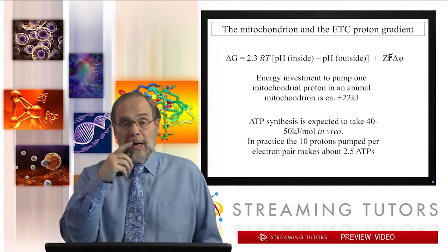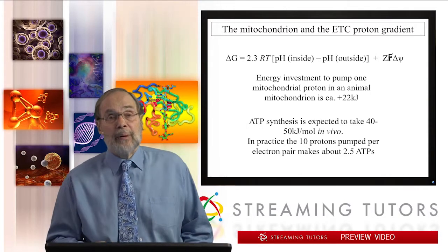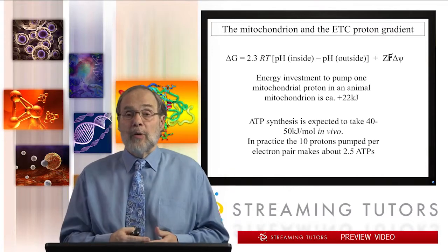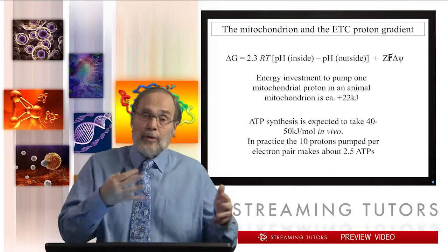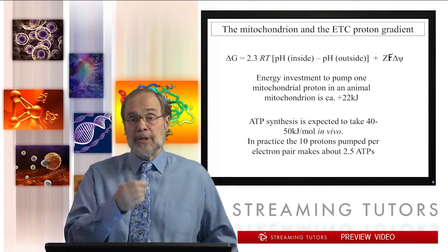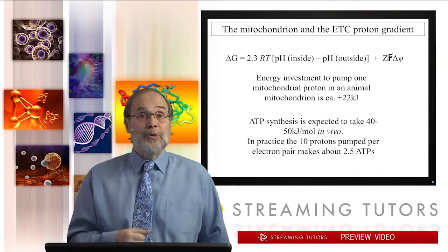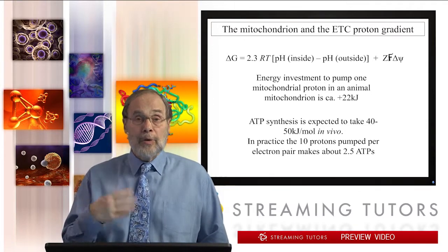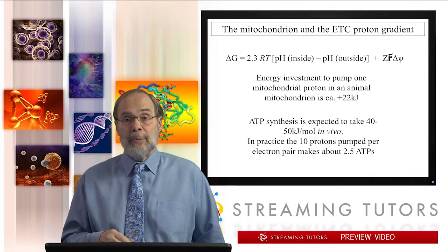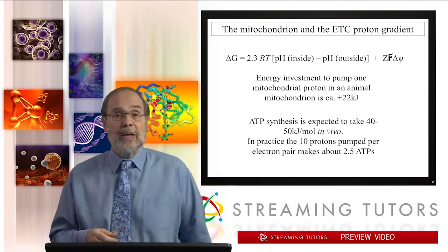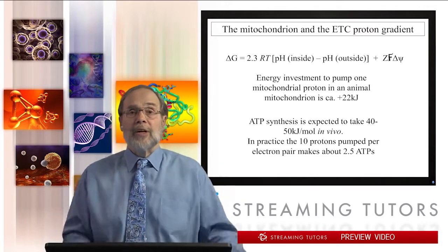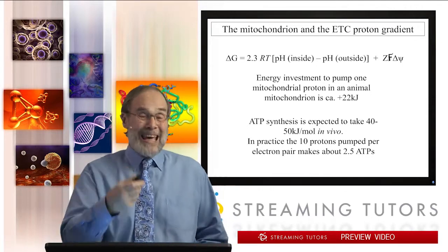Plugging in the relevant values, ATP synthesis is expected to take about 40 to 50 kilojoules per mole in vivo — remember that the free energy of hydrolysis in vivo is a little higher than the standard free energy in vitro. From the electron transport system, about 10 protons are pumped per electron pair, giving 220 kilojoules of energy — enough to make a little more than four ATPs. In practice, you make about 2.5 ATPs, and the rest of the energy in the proton gradient is used for other purposes, including pumping phosphate into the mitochondria to make ATP.